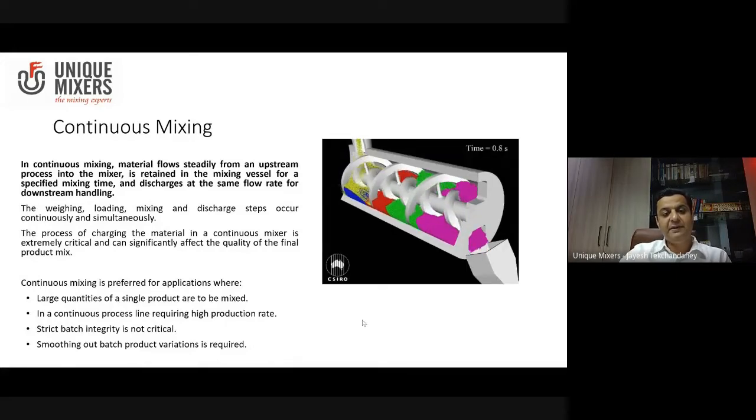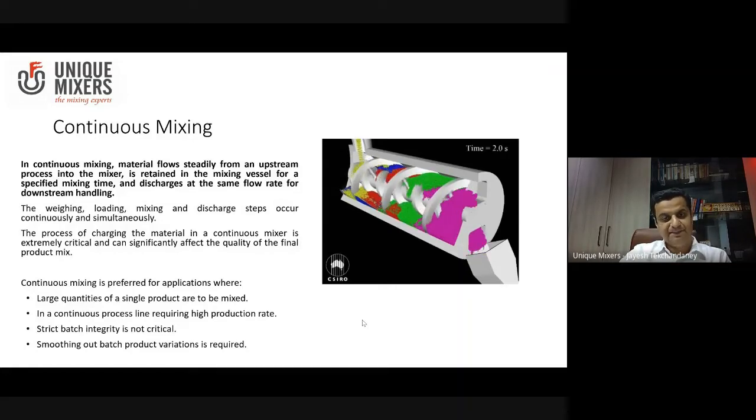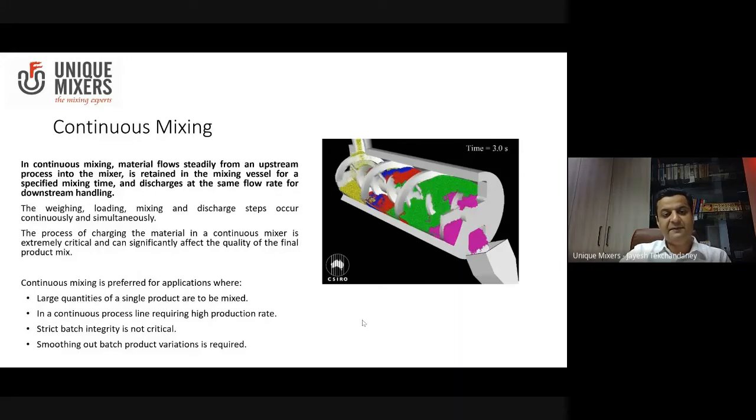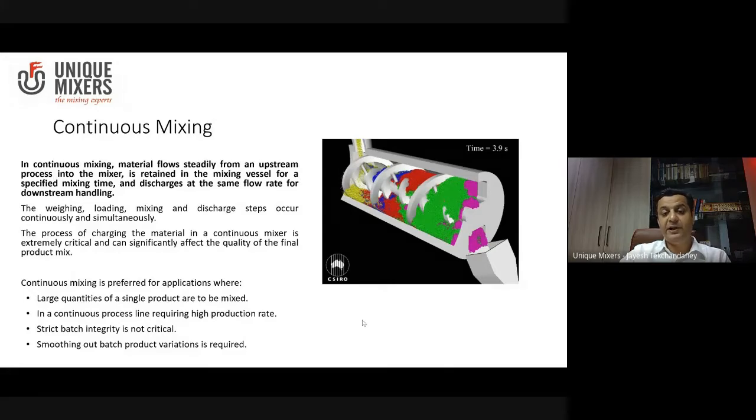In continuous mixing, material flows steadily from an upstream process into the mixer, is retained in the mixing vessel for a specified mixing time, and discharges at the same flow rate for downstream handling. There's an input and an output, the input matches the output, and the material spends a specific time within the mixer called the retention time.